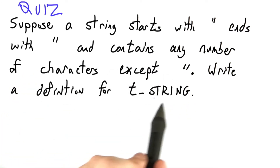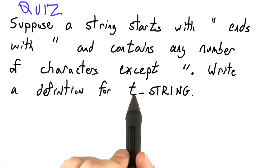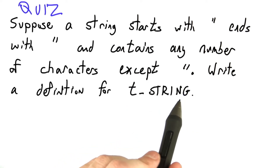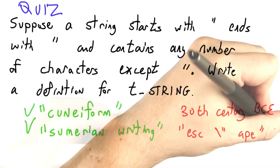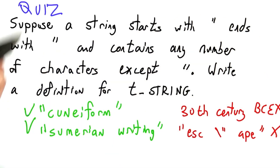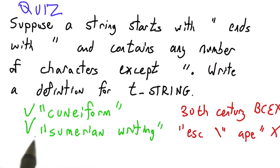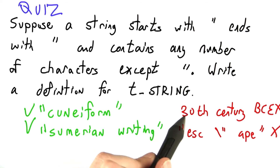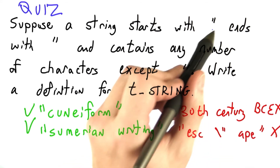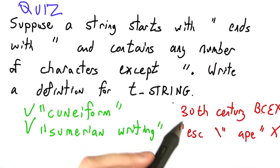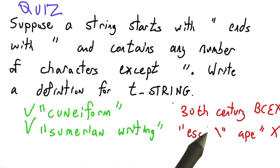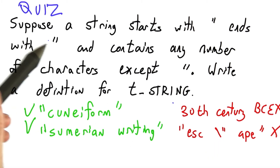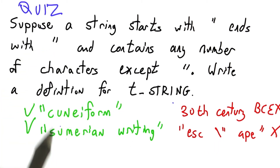I'd like you to write a definition for the Python function t_string and submit it via the interpreter. Just to make this a bit clearer, we should definitely accept quoted strings like "cuneiform" or "Sumerian writing". But we should not accept "30th century BCE" because it doesn't start and end with quotes. And we should not accept a string which has an escaped double quote — don't worry about escaped double quotes for now.